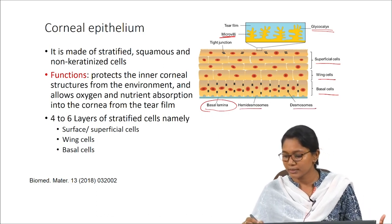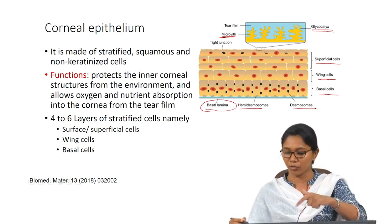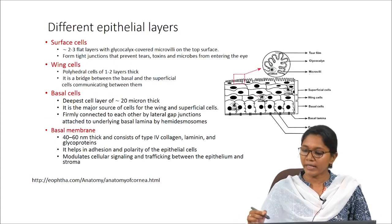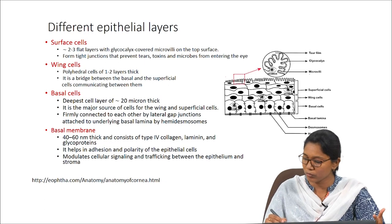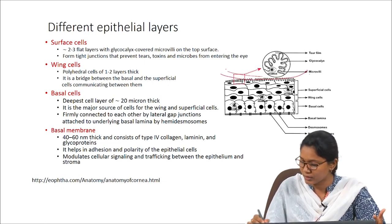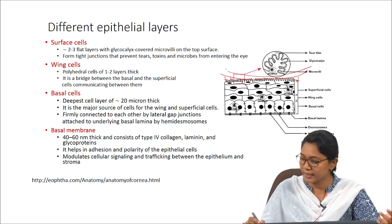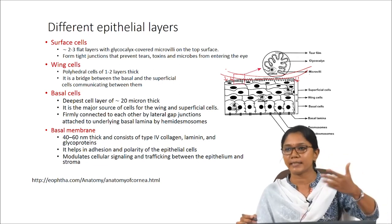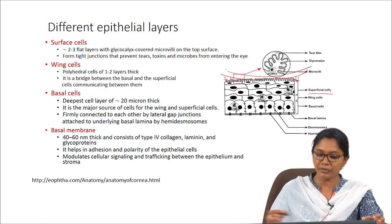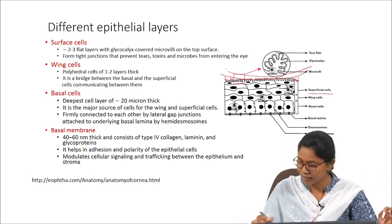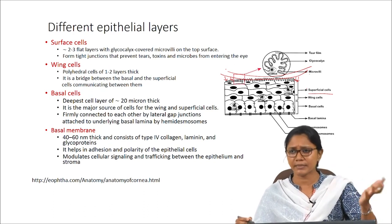Going into each layer's role: the tear film is the outermost region that interacts with the microvilli and glycocalyx, acting as a barrier and allowing only oxygen and certain substances to enter. The superficial cells are two to three layers covered with glycocalyx and microvilli that prevent toxins from entering the eye. The wing cells are polyhedral cells forming the middle layer of the epithelium, bridging the superficial cells and the basal cells.